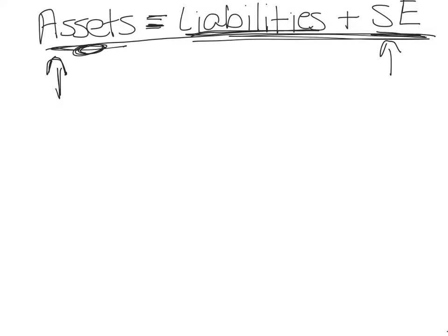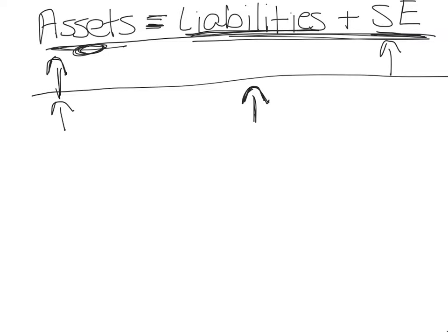If you borrow money from a bank or buy something on account, your liabilities increase. Borrowing from a bank creates notes payable; buying on account creates accounts payable. Borrowing from a bank also increases cash, so assets increase as well. Similarly, if you buy office supplies or equipment on account, assets go up and liabilities — specifically accounts payable — go up. Both sides of the equation are affected in the same fashion.